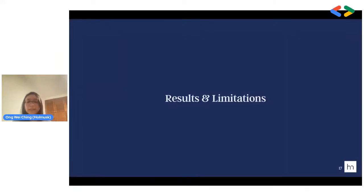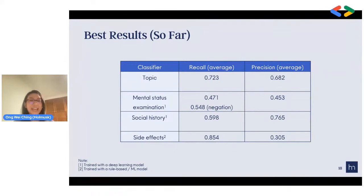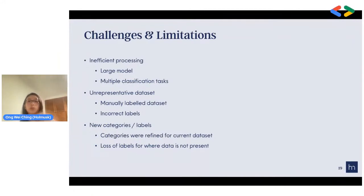Moving on to the last part on results and limitations. These are the best results we have so far, and we are still in the midst of developing various models — take this with a pinch of salt. Some limitations include the potential for inefficient processing, because the BERT model is very large and there are many classification tasks — predicting the topic, MSE, and social history. With so many tasks and models, it can take considerable time to predict results.